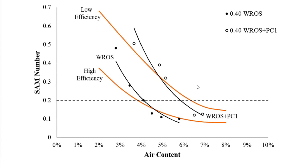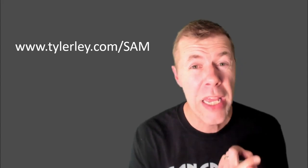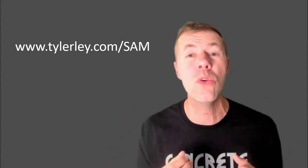Here's another data set using the same cements but different combinations of admixtures. One combination of admixtures, tested at different air contents with different amounts of air-entrainer, plots near the low efficiency line. The other combination of admixtures plots near the high efficiency line. And the hardened concrete data tells the exact same story — one air void system is very good, the other is not so good.